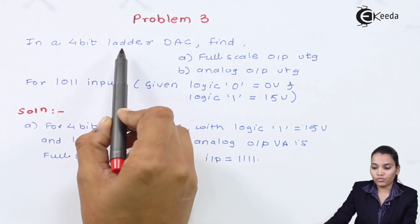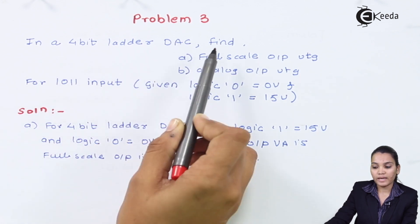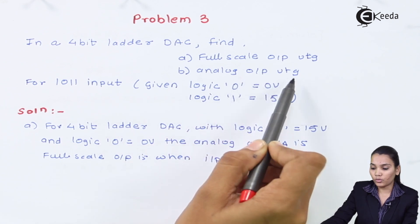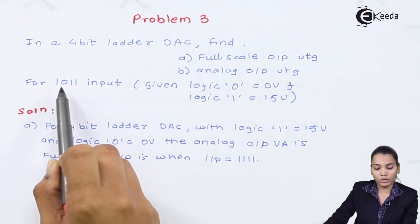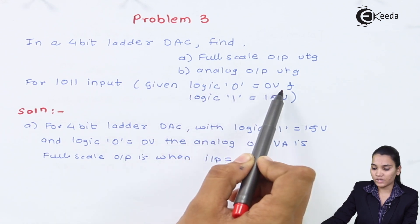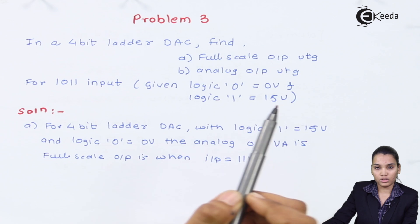In this question, a 4-bit ladder DAC is given and we have to find out the full scale output voltage and the analog output voltage. If the input is 1011, logic 0 represents 0 volts and logic 1 represents 15 volts.